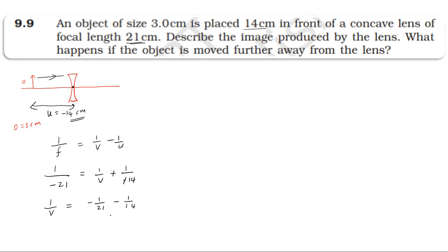Finding the LCM of 21 and 14, which is 42. So 1/v = minus 2/42 minus 3/42 = minus 5/42, giving v equal to minus 8.4 cm.